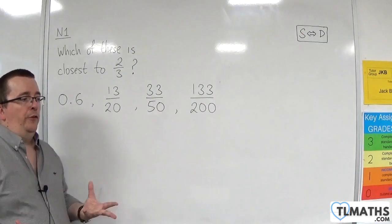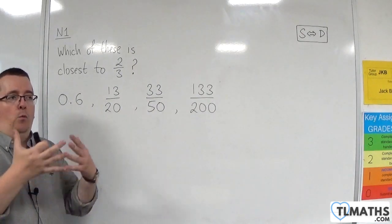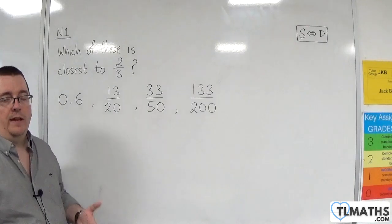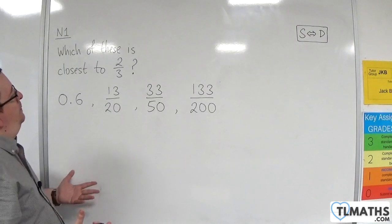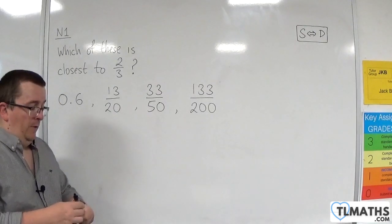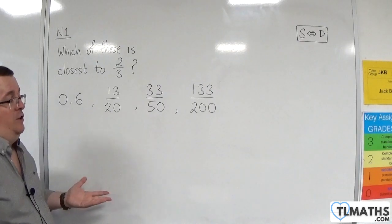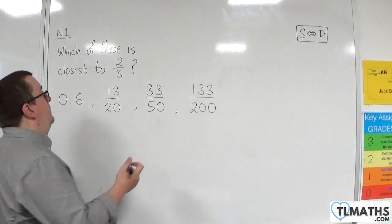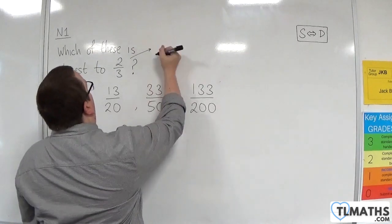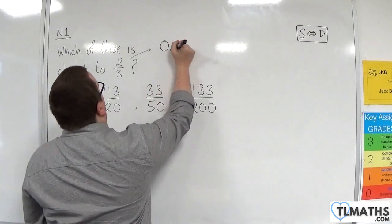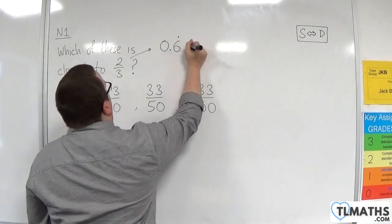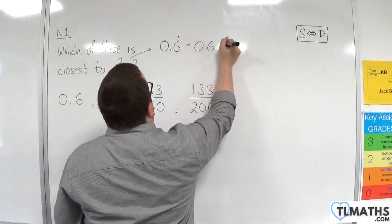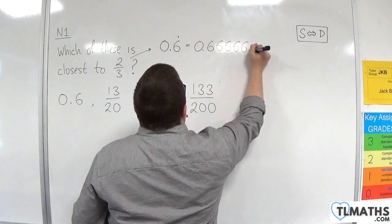Now, two-thirds is one of those fractions that you would like to know what it is as a decimal, going into the exam, if possible. Obviously, if you've got a calculator, then you can convert it into a decimal very easily. But two-thirds is 0.6 recurring. So 0.66666, etc.